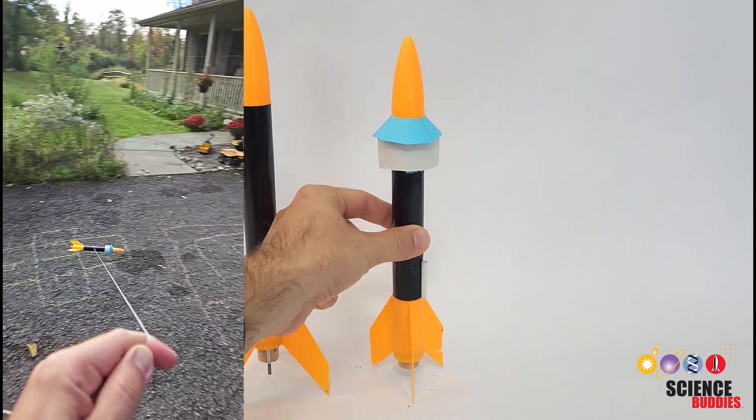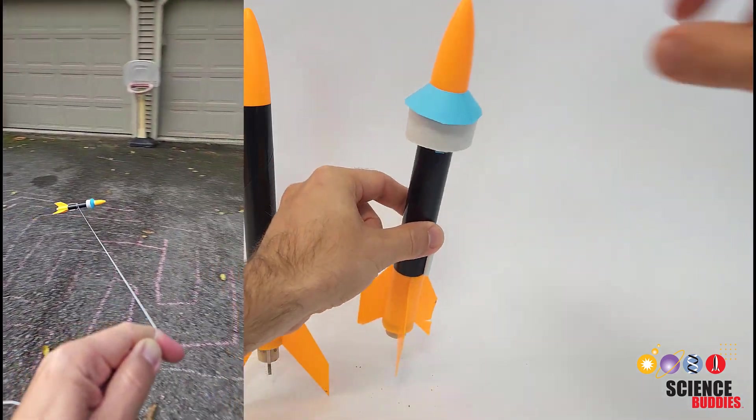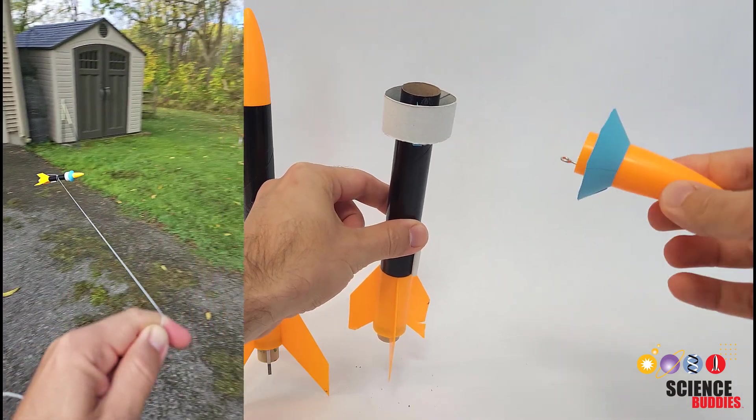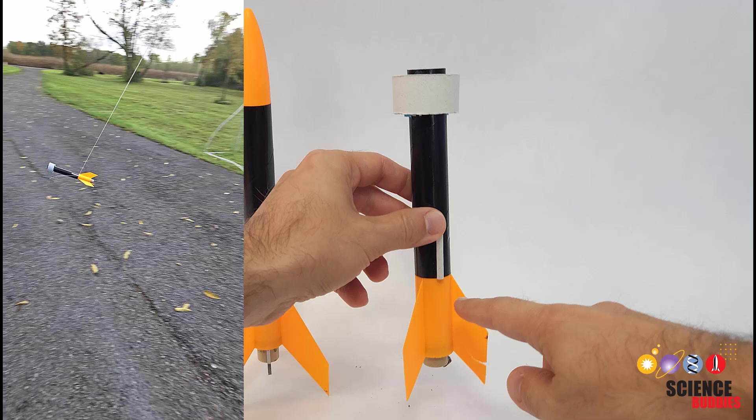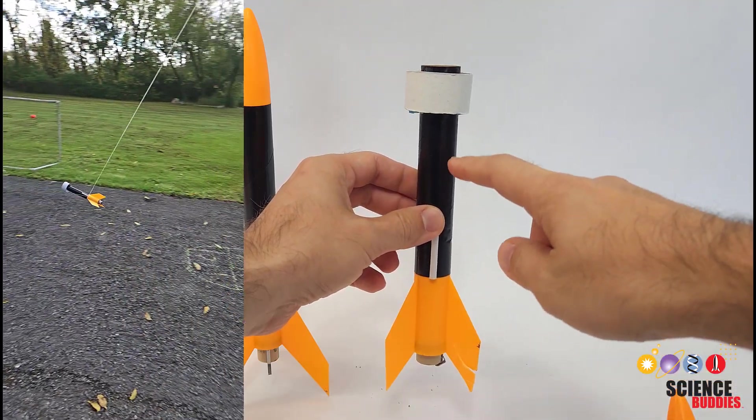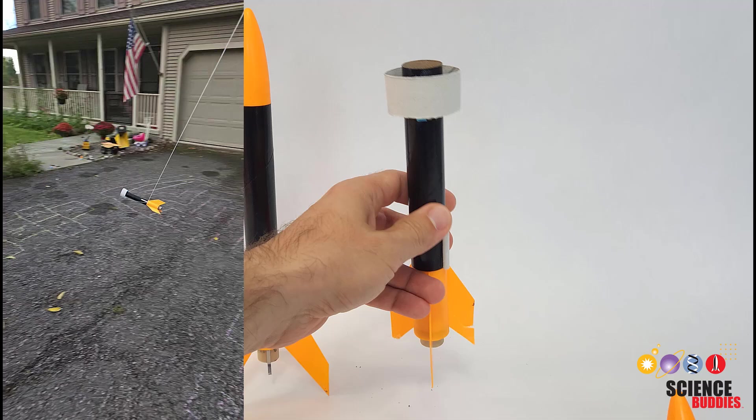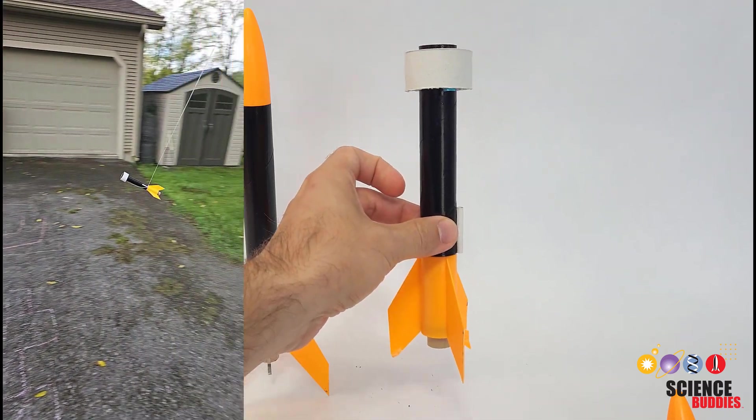On the way up, the center of pressure is below the center of mass. Then, after the engine burns out, the nose cone ejects, and the ring fin is exposed. On the way back down, coming tail first, the center of pressure is above the center of mass. So in both configurations, the rocket is stable and remains vertical.